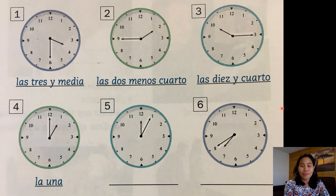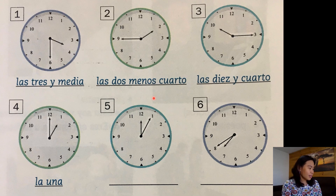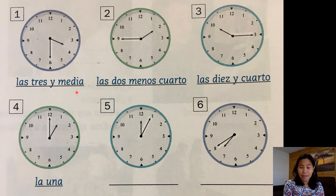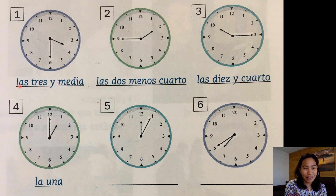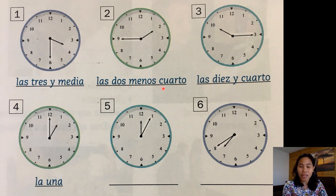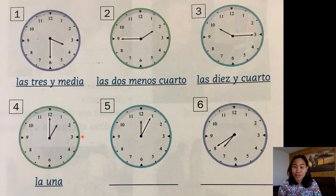Now let's practice. As you can see, I have here — mira los relojes. Number one: las tres y media. Las tres y media. We say this the same in Tagalog but we put a — a las tres y media. That's the only difference, we put a las. Number two: las dos menos cuarto. And number three: las diez y cuarto. Number four: la una. Now I want you to answer five and six, and put your answer in the comments — let's see if you got the correct answer.